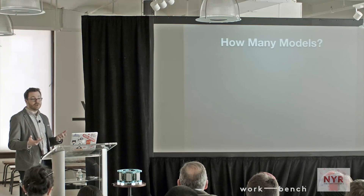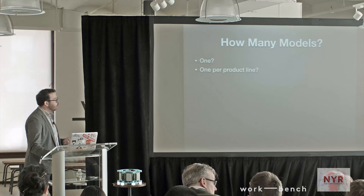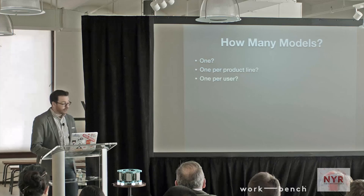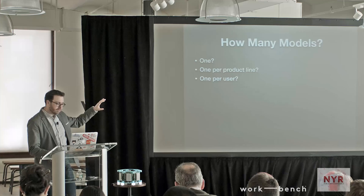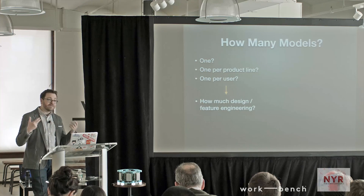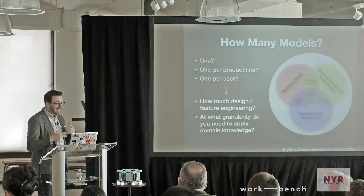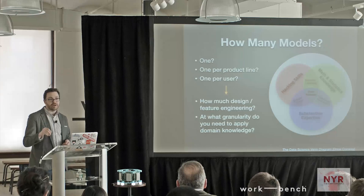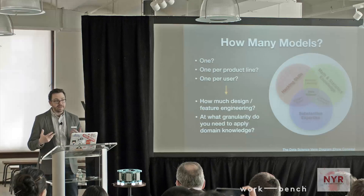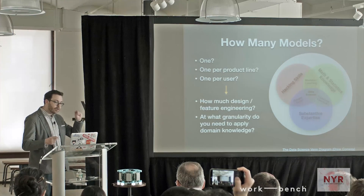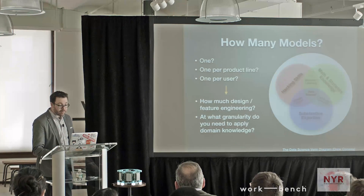Next question: how many models are you building? Are you building one model, one per product line, or one per user — potentially a very large number of models? These questions beg the question of how much design or feature engineering you're actually doing. Or equivalently, at what granularity do you need to apply domain knowledge to be effective? Substantive expertise in a domain is a critical part of being effective in data science, so having an architecture that lets you apply your domain knowledge at the right times and right level of granularity is critical.